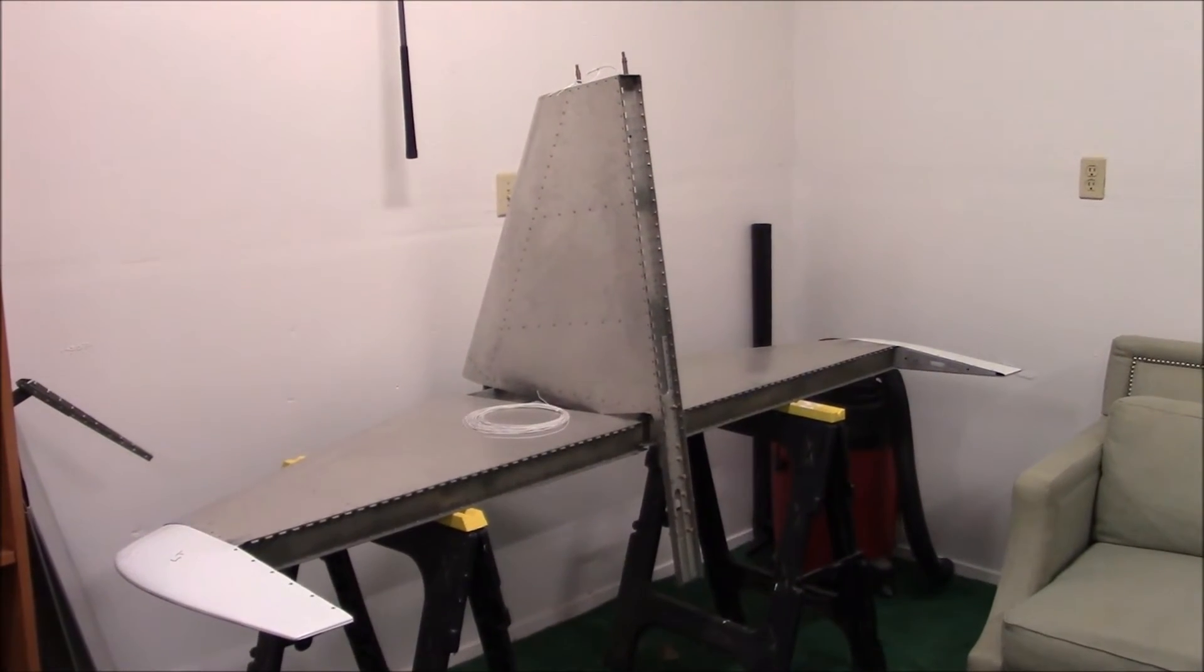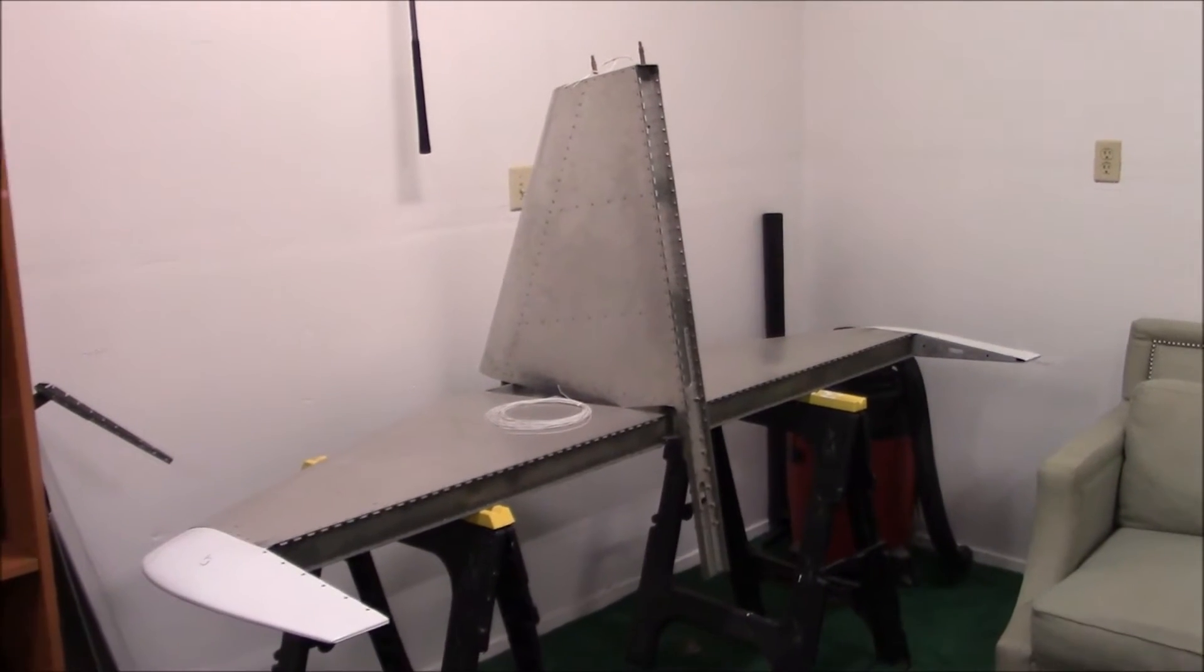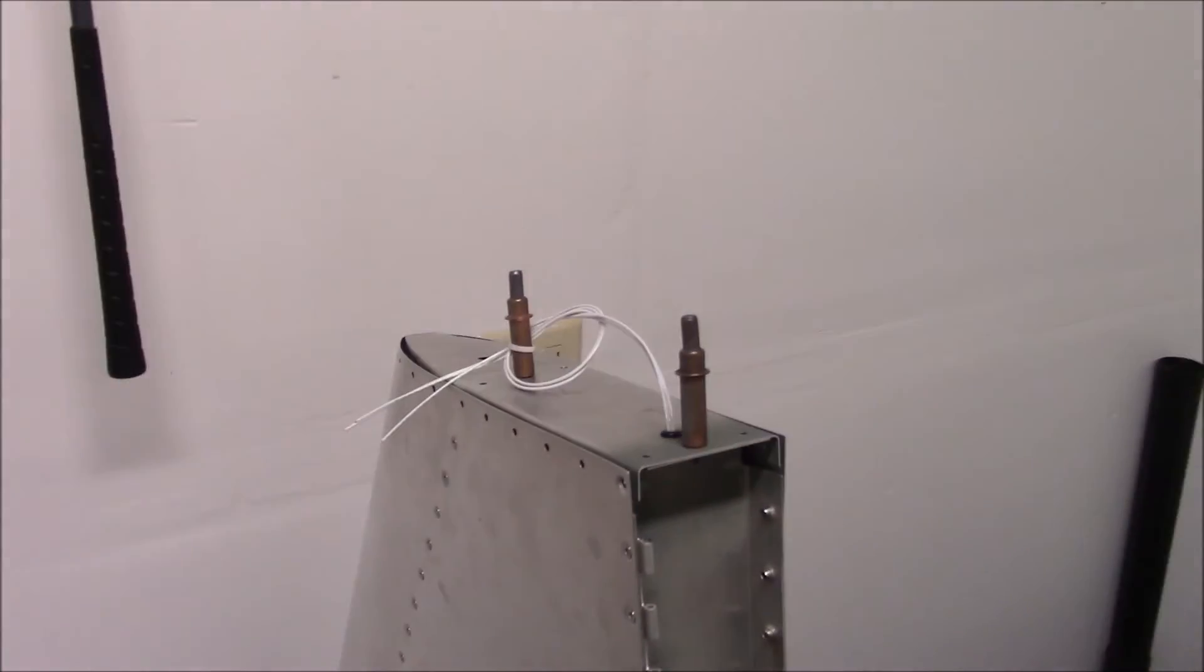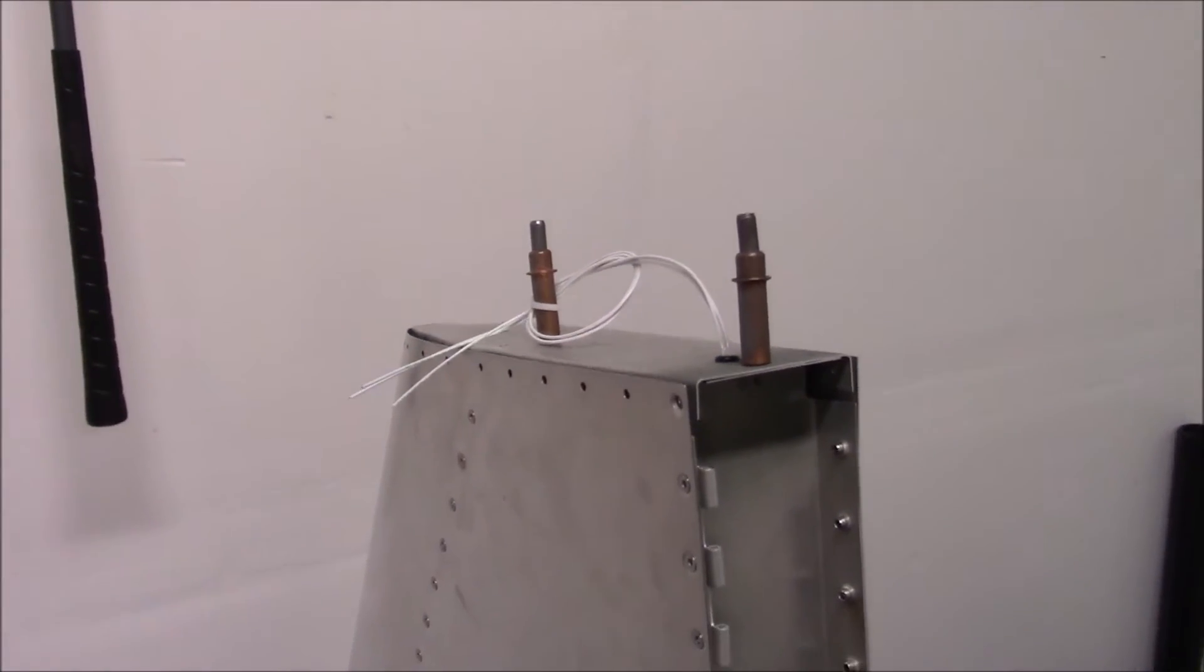All right, there it is with all the skin riveted on. You can see on the left side here, this is where the hinge will go, or is, but will be attached to the rudder. And I have the wires ready to go for the Whalen LED lights up top. And it should be good from here.